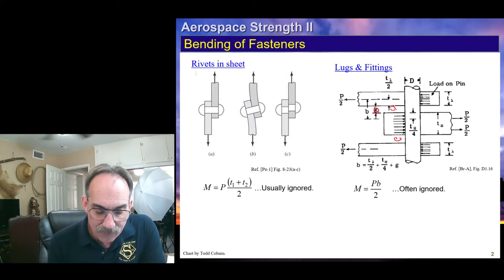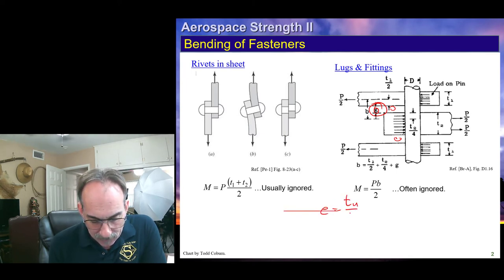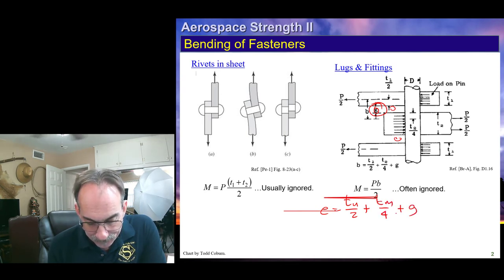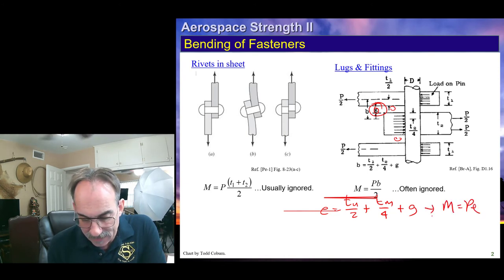If that's the case, what's going to happen is, if we have any gap, we will calculate the total gap. We'll just shove that plate over to one side, take the total gap. Our eccentricity, once again, is going to be T of the upper plate over 2, plus T of the middle plate over 4, plus any and all gap. And then our moment is simply PE.